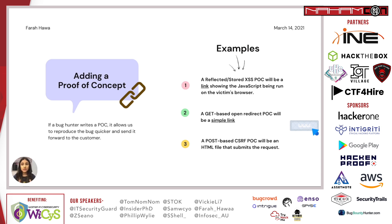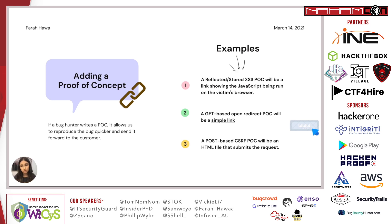The next point is adding a proof of concept. Sometimes bug hunters don't include POCs, which means triagers have to spend extra time reproducing the submission. In some cases they don't succeed because something is missing or a mistake is made, which again leads to questions and delays. Including a POC allows us to validate it faster and send it to the customer.